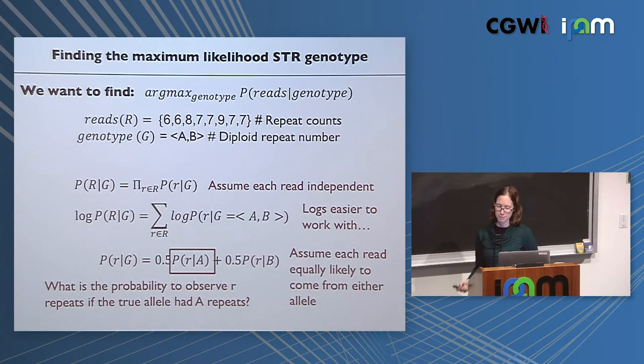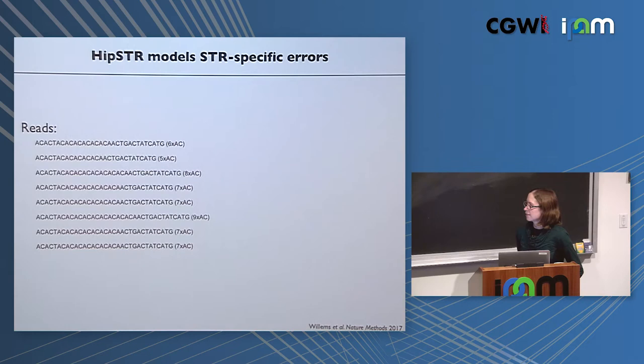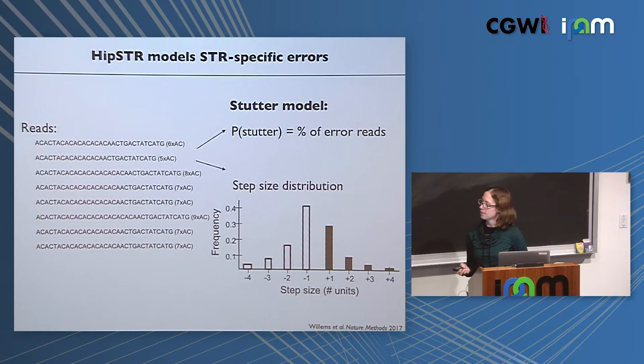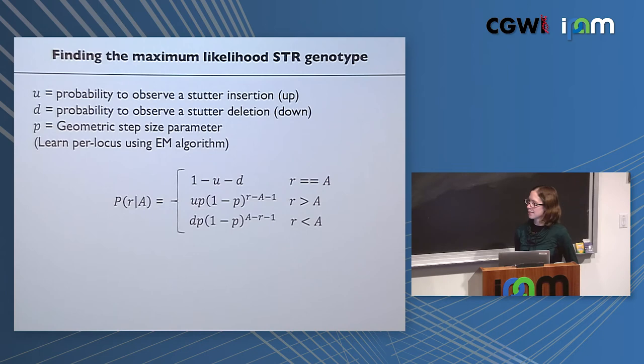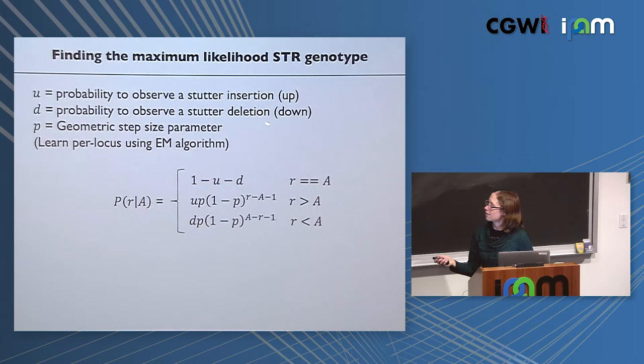HIPster has a stutter model with two properties: the probability of observing stutter in the first place, and given a stutter error, the distribution of the size of that error. HIPster learns three parameters: probability of insertion due to stutter, probability of deletion due to stutter, and a geometric step size distribution described by a single parameter p.